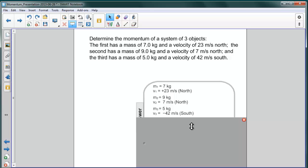Now the momentum for a system of three objects is just given by the sum of the momentum of each of the three objects. So M1V1 plus M2V2 plus M3V3.